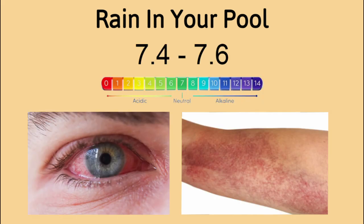We know from our previous videos that pH should be between 7.4 and 7.6. When the levels fall out of this range, swimmers' eyes may start to burn and their skin can become irritated.